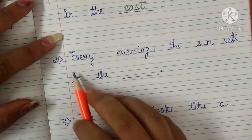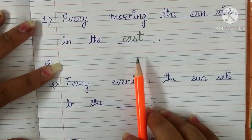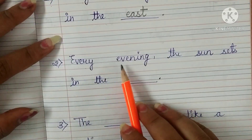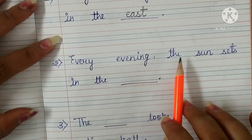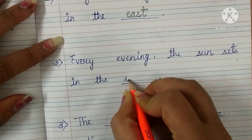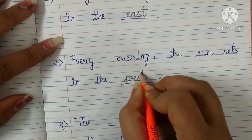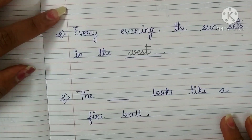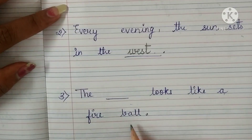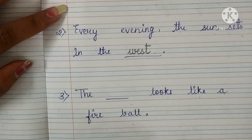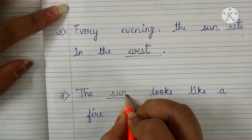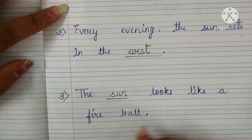Number 2: Every evening the sun sets in the ___. The answer: Every evening the sun sets in the west. Number 3: The ___ looks like a fireball. Fireball जैसा कौन दिखता है? The answer: The sun looks like a fireball.